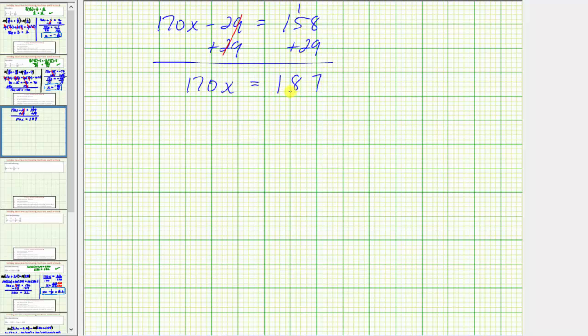And for our last step, because 170x means 170 times x, to undo this multiplication and solve for x, we need to divide both sides by 170. On the left, dividing by 170 undoes multiplying by 170, and therefore the left side simplifies to x, or 170 divided by 170 is 1, and 1 times x is x. So we have x equals 187 170ths, or 187 divided by 170.